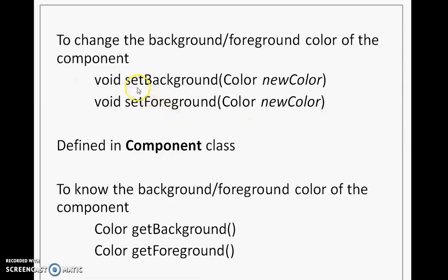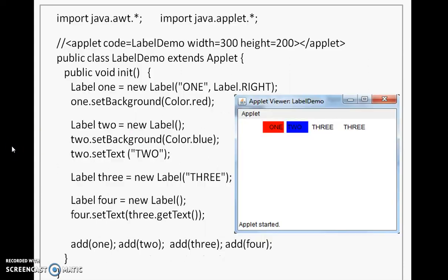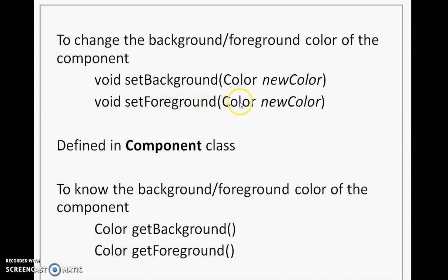In the previous program, setBackground was used for changing the background color of a component. There is also a setForeground method that changes the text color of a component. For example, to display label3's text in red, call setForeground(Color.RED) on it. Both setBackground and setForeground are defined in the Component class. Corresponding getter methods, getBackground and getForeground, are available for fetching the current background and foreground colors.